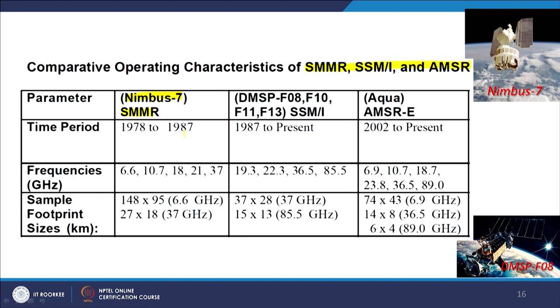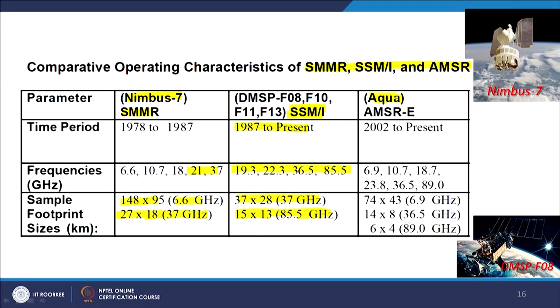The SMMR operated for about 9 years with frequencies in certain ranges, and its spatial resolution footprint was quite coarse. Then on the DMSP satellite came the SSMI sensor or radiometer. Once SMMR ended, SSMI started working, and the spatial resolution was improved relatively. There were also changes in the frequency bands. When discussing passive or active microwave, we use frequency terminology instead of wavelength for the microwave part of the EM spectrum.